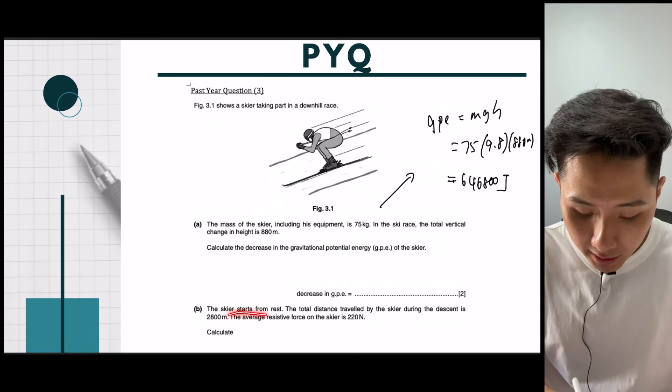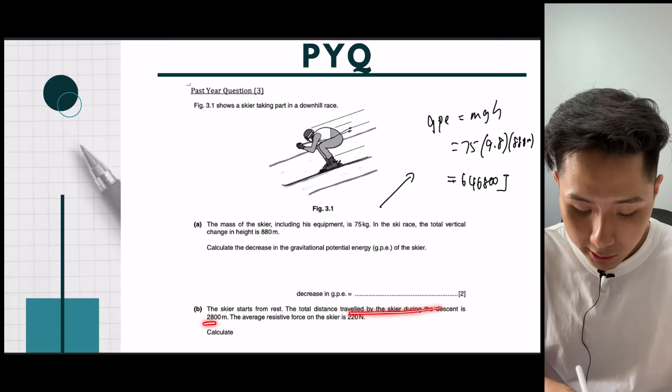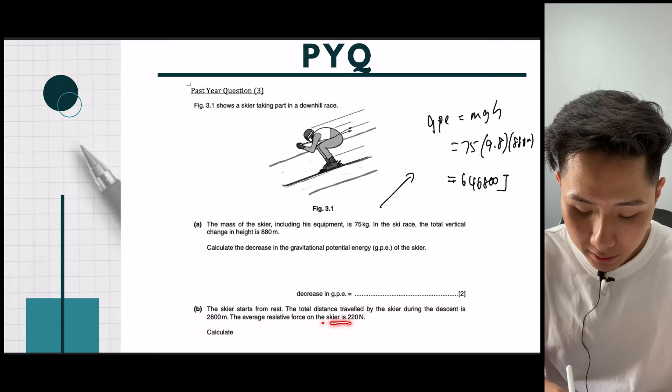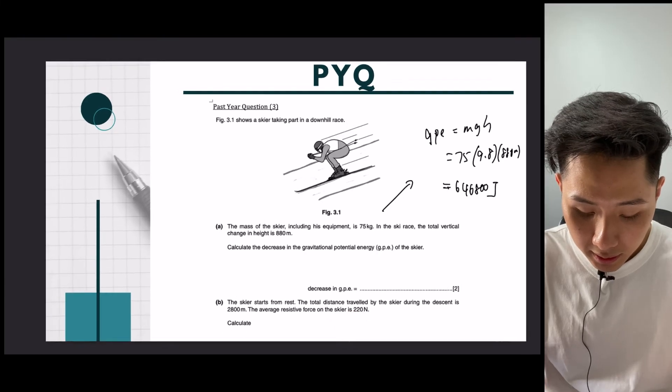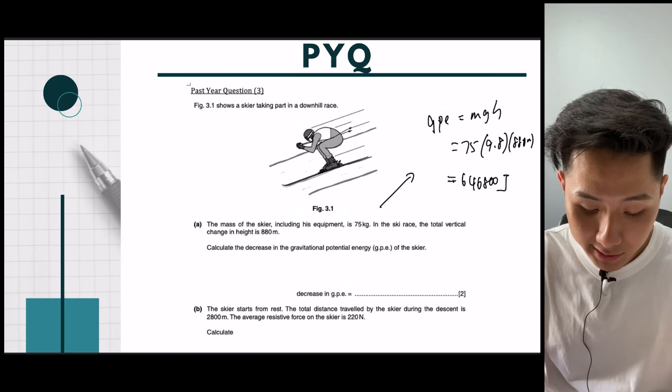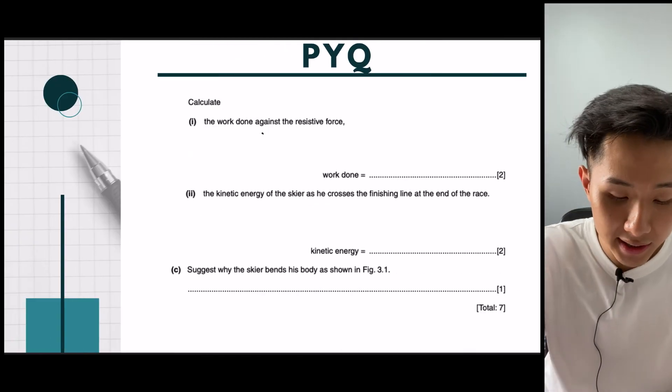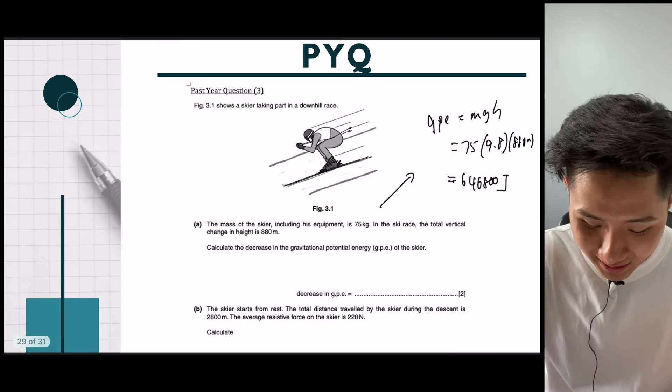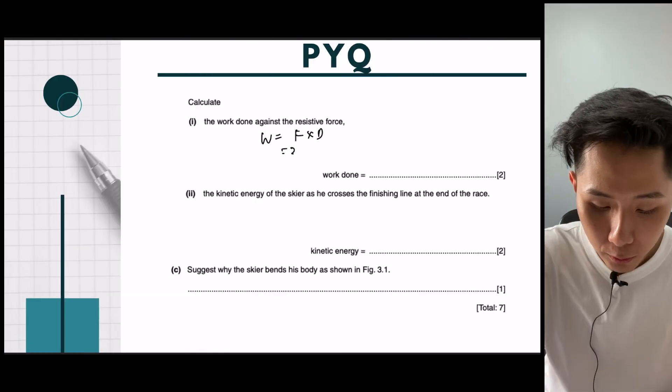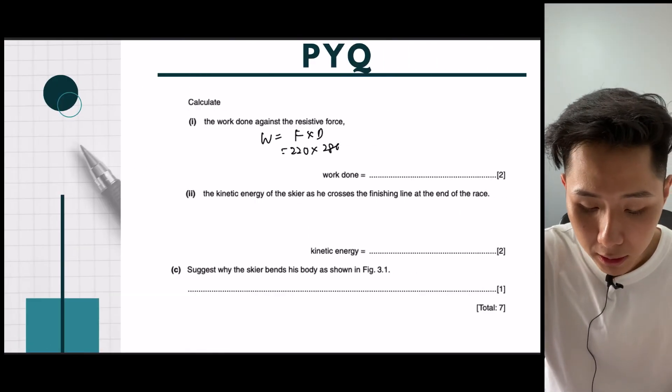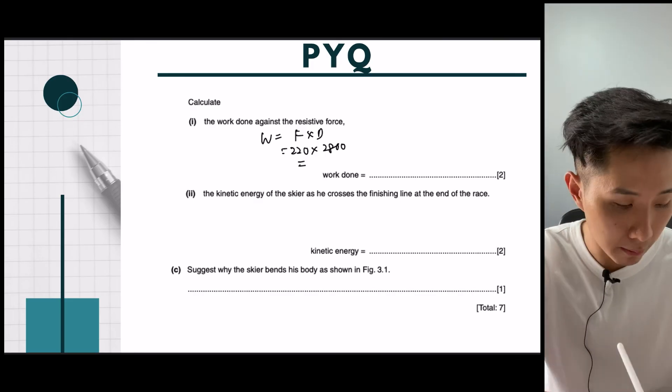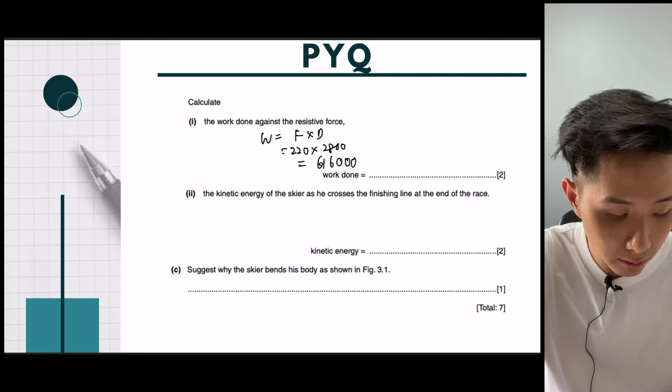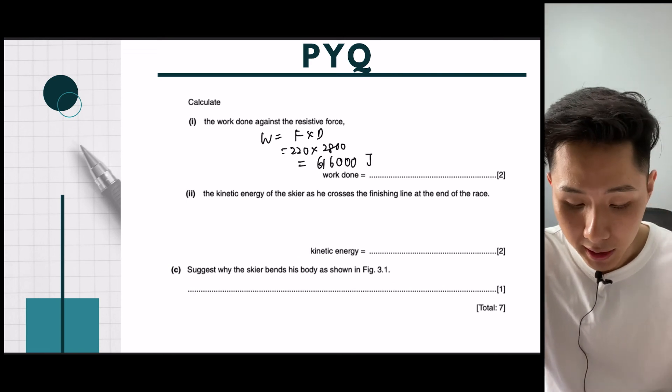The skier starts from rest, and the total distance traveled is 2800, and the average resistance force is 220. So, calculate the work done against the resistance force. So, work done is F times distance. Again, the same formula. I'm just going to use 220 multiplied by 2800, which I will get 616,000. So, that's my answer.